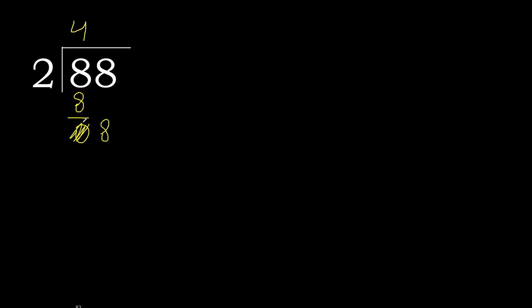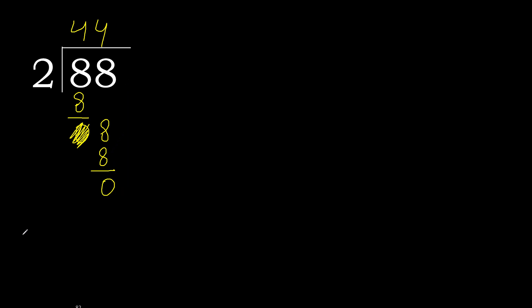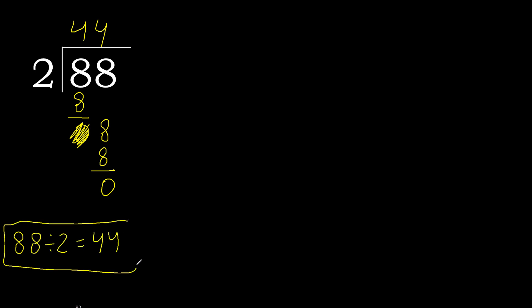Eliminate 0 on this side. 8: 2 multiplied by 4 is 8. 8 minus 8 equals 0. And here that is not a number, therefore finish it — 88 divided by 2 is 44.